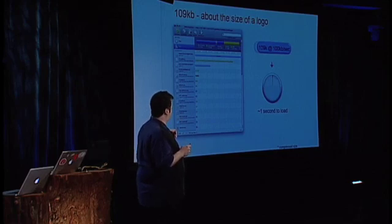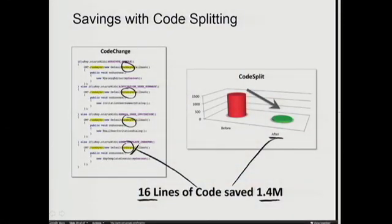I was able to gain all of this improvement, and what's great is that I didn't have to work very hard for it, relatively speaking. If you look at the next slide, you'll see that we added about 16 lines of code, because our application is all based on widgets. The widgets know when to load; they're part of context, and you switch from context to context. So we simply added a bunch of run asyncs, and we were able to gain 1.4 megabytes of savings for just 16 lines of code — which is a pretty great saving.